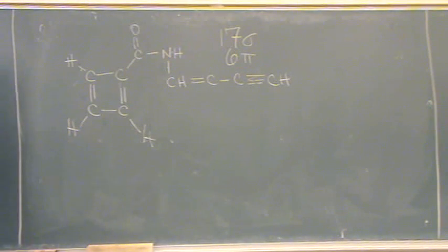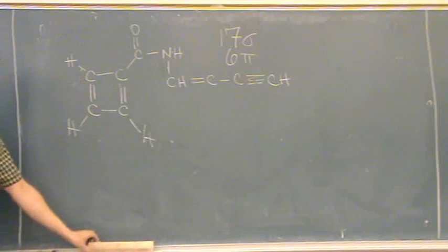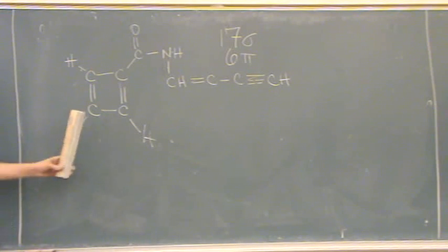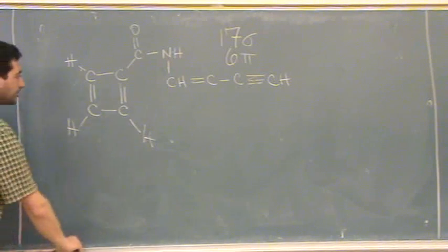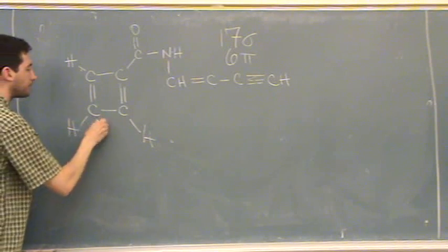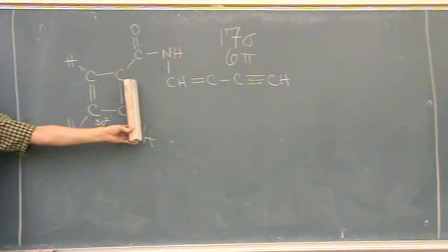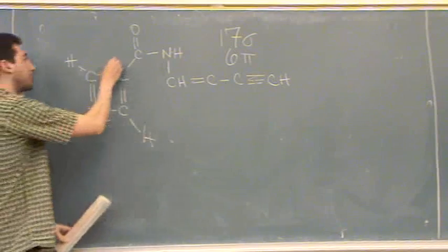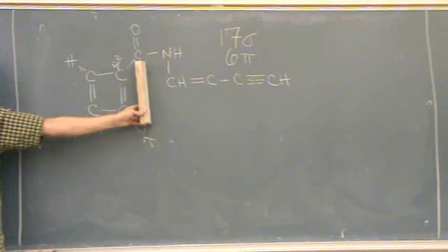So the other kind of question we could ask you about this is hybridization. So let's try one of those. We'll just go one at a time. How about this carbon right there? SP2. Yeah. That one's SP2. It has three groups. How about this carbon right there? Same three groups. SP2. This one? SP2.